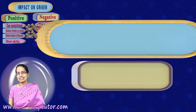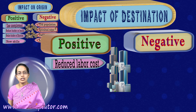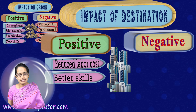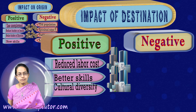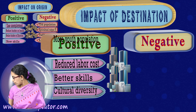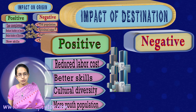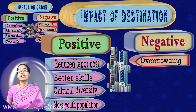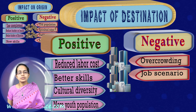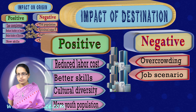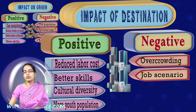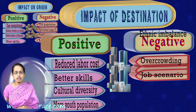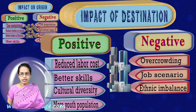For the destination, there is reduced labor cost — many people ready to work at a lower cost — better skills coming in, cultural diversity, and more youth population entering the city. However, this brings overcrowding, competition for housing, worsening job scenarios, and higher pressure on the ethnic balance.